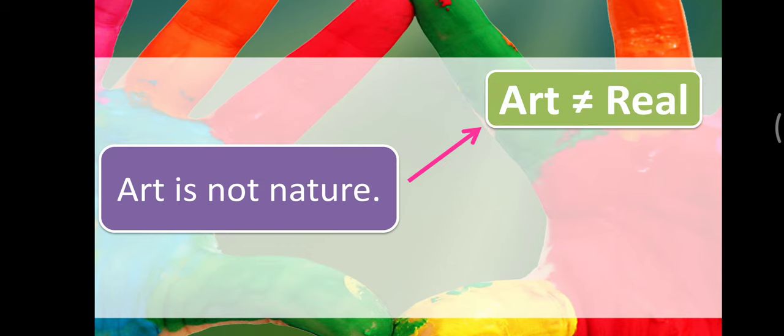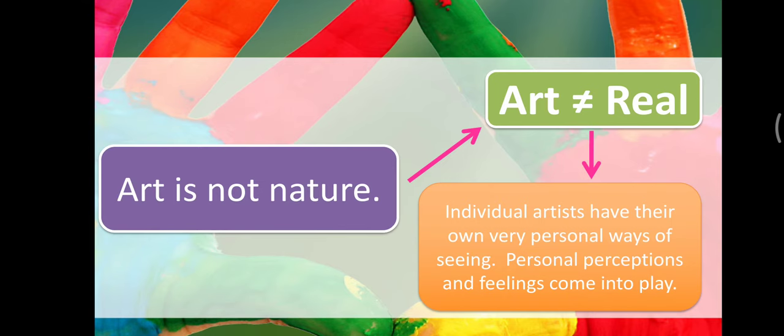Components of art: the work and the artist. Art is not nature. Art is not equal to real. Individual artists have their own personal ways of saying—personal perceptions and feelings come into play. When we see abstract paintings, we see the artist's emotion. If it's messy, it could be releasing rage or confusion. Light colors might mean happiness, comfort, etc. Art is not equal to real.